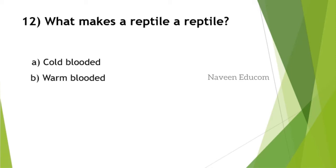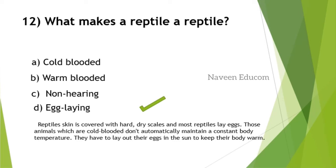What makes a reptile a reptile? What is the basic feature considered for an animal to be a reptile? It must be egg laying. Reptile skin is covered with hard, dry scales and most reptiles lay eggs. Animals which are cold-blooded don't automatically maintain constant body temperature. They have to lay out their eggs in the sun to keep their body warm. That's an interesting portion regarding biology.